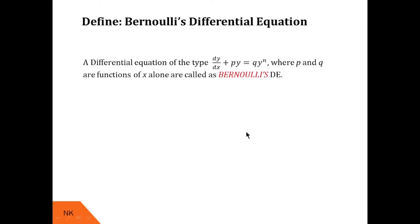Bernoulli's differential equation is given by dy/dx + Py = Qy^n, where P and Q are both functions of x. The left-hand side of this Bernoulli's equation looks exactly like a linear differential equation: dy/dx + Py = Q. The difference is only on the RHS — in LDE we have only Q, whereas here we have Qy^n.